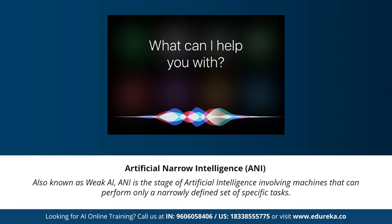Artificial narrow intelligence, also known as weak AI, is a stage involving machines that can perform only a narrowly defined set of specific tasks. At this stage, machines don't possess any thinking ability — they just perform predefined functions. Examples include Siri, Alexa, AlphaGo, Sophia, and self-driving cars. Almost all AI-based systems built to date fall under weak AI.